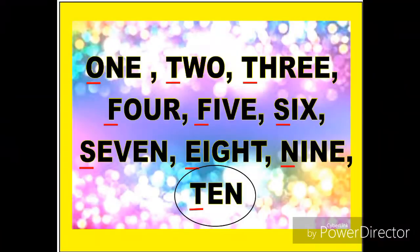Here is the answer: one, two, three, four, five, six, seven, eight, nine, and ten. So if you observe the first letter of each word, we have O, T, T, F, F, S, S, E, N — and the next letter is T, which stands for ten.